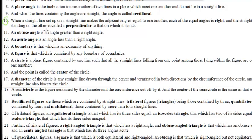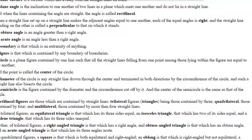When a straight line set up on a straight line makes the adjacent angles equal to one another, each of the equal angles is right and the straight line standing on the other is called a perpendicular to that on which it stands.